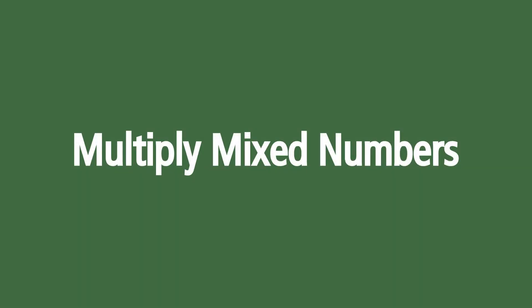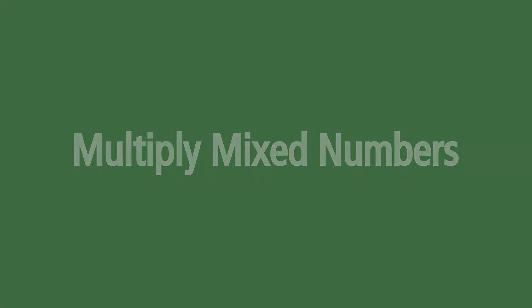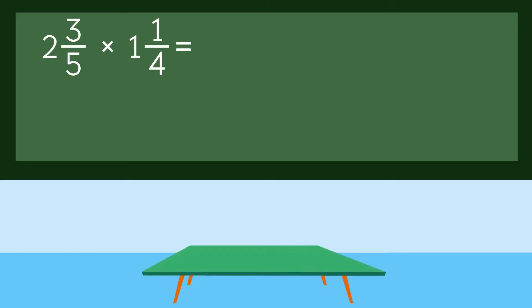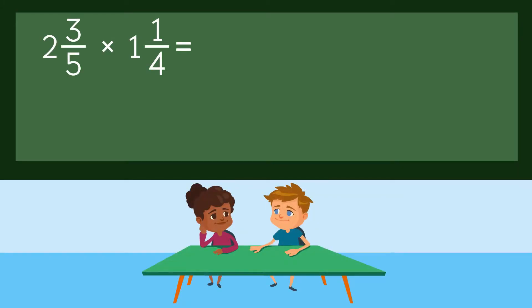Multiply mixed numbers. Let's try an example: 2 and 3 fifths times 1 and 1 fourth.